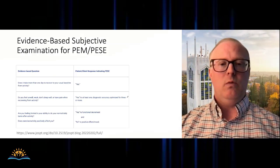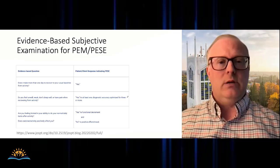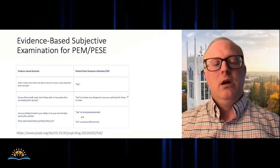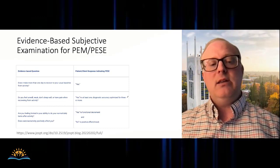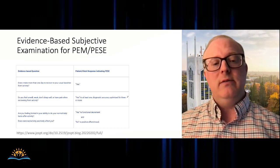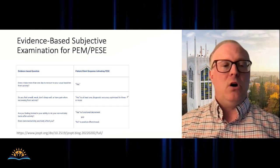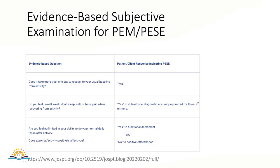So how do we start providing care? We think based on the evidence that we've gathered over time, there are some questions you can ask to try and find out whether somebody may have post-exertional malaise or post-exertional symptom exacerbation: Does it take more than one day to recover to your usual baseline after you've had a busier day or increase in your activity level? Do you feel unwell, weak, don't sleep well, or have pain when recovering from activity? If yes to three or more of those is highly predictive. Are you feeling limited in your ability to do normal activity tasks after high activity days or high activity times? And does exercise or activity positively affect you? So if it's yes to the first and no to the second, you're thinking post-exertional malaise or post-exertional symptom exacerbation until proven otherwise. The DePaul symptom questionnaire is also useful as a more exhaustive characterization of PEM symptoms.